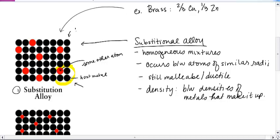you could think of the black ones as being the copper and the red ones as being the zinc. And that would be sort of an example of brass.